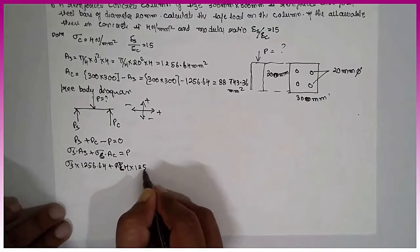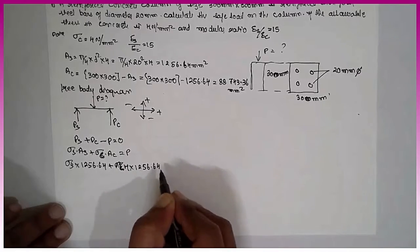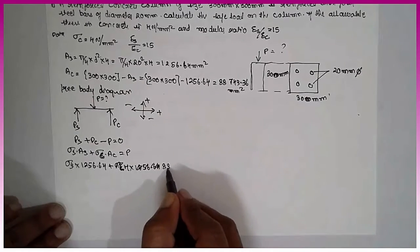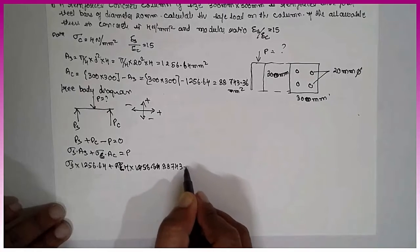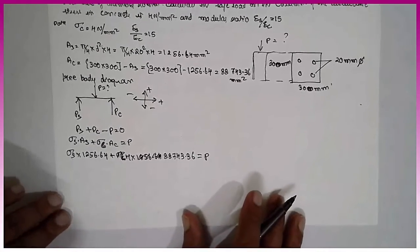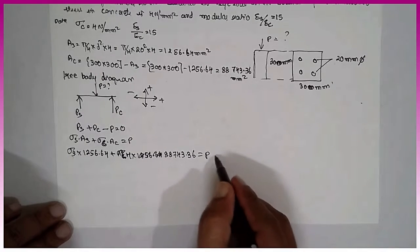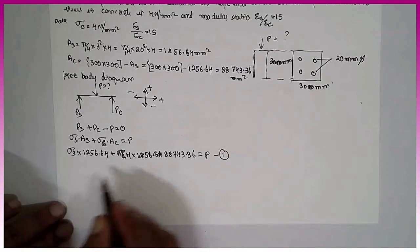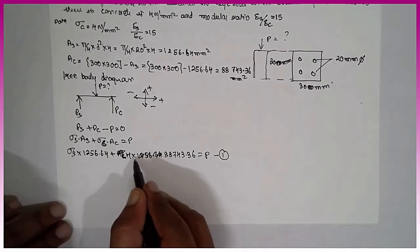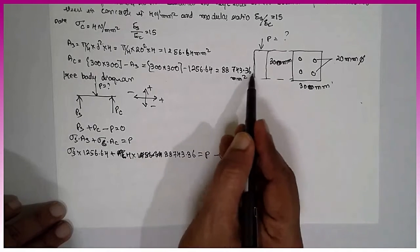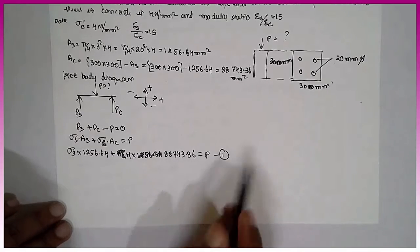Already they have given the Sigma C value here, 4 into area, 4 into area 88743.36 is equal to P. Consider equation 1. 4 into area of the concrete. This is the area of the concrete.